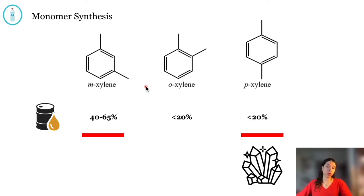They are all found in crude oil in a ratio of from 40 to 65% of m-xylene and up to 20% of the remaining ortho and para isomers.